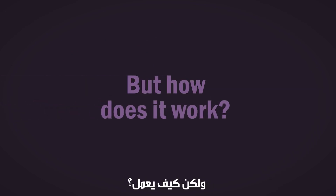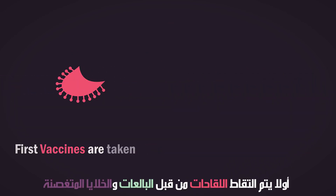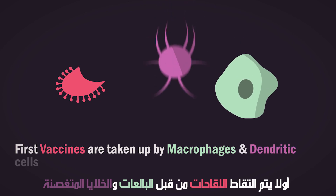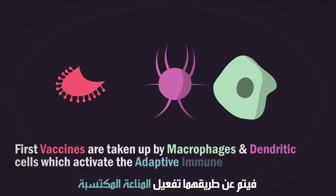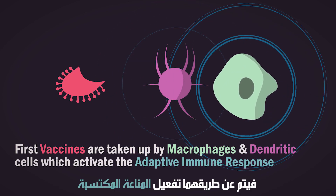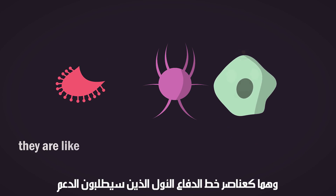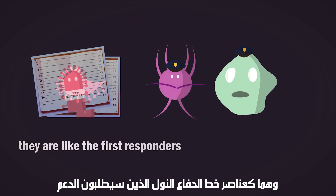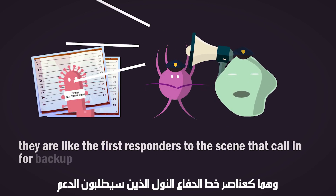But how does it work? First, vaccines are taken up by macrophages and dendritic cells which activate the adaptive immune response. They are like the first responders to the scene that call in for backup.